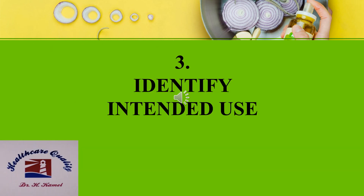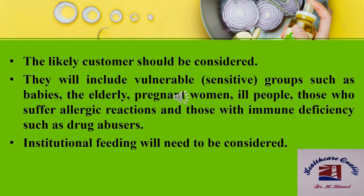The fourth step is to identify intended use or customers. The likely customer should be considered. They will include vulnerable groups such as babies, the elderly, pregnant women, ill people, those who suffer allergic reactions, and those with immune deficiency such as drug abusers. Institutional feeding will also need to be considered.